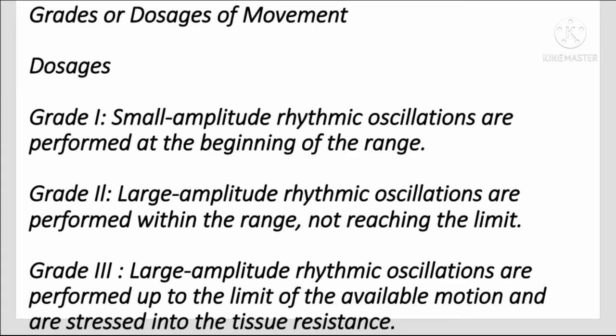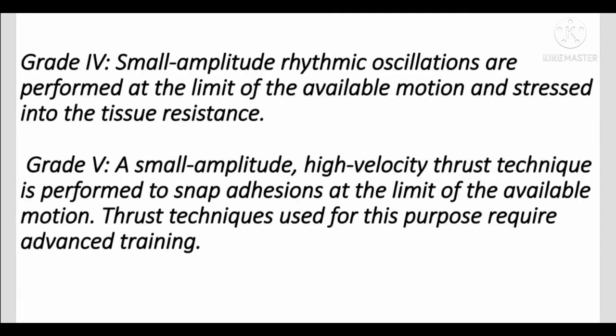Grades and dosage of movement: Grade 1 — small amplitude rhythmic oscillations at the beginning of the range. Grade 2 — large amplitude rhythmic oscillations within the range, not reaching the limit. Grade 3 — large amplitude rhythmic oscillations up to the limit of available motion, stressed into tissue resistance. Grade 4 — small amplitude rhythmic oscillations at the limit, stressed into tissue resistance. Grade 5 — small amplitude, high velocity thrust to snap adhesion at the limit of available motion; requires advanced training.